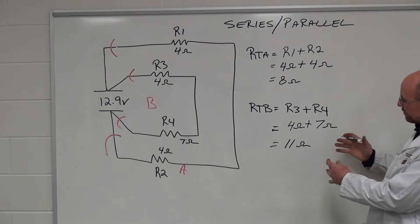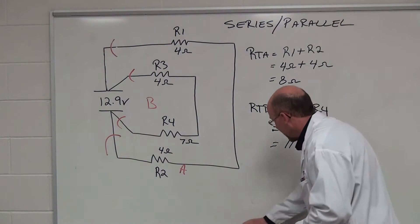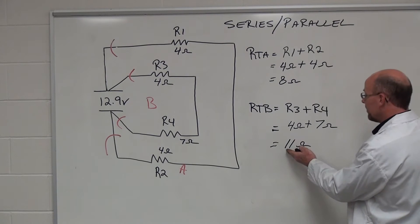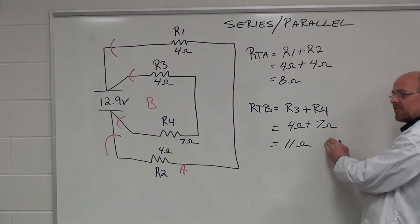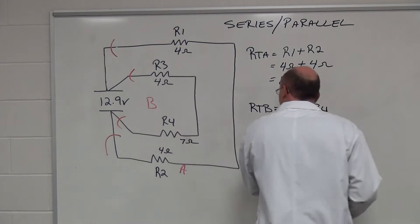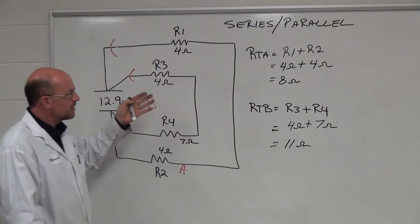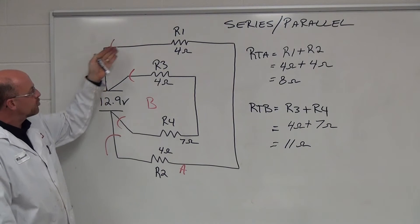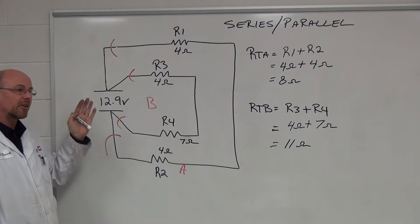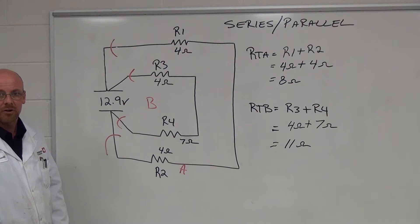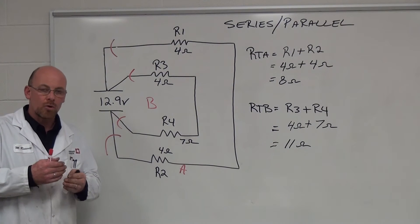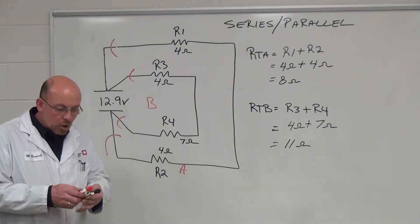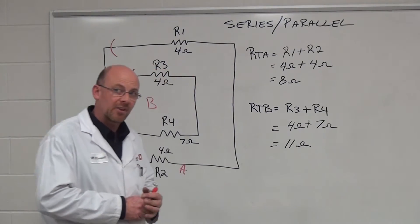Now the assumption typically would be for most technicians is because we have a series circuit here and a series circuit here that we add the two of these together. But that's not the case. What ends up happening here is that we actually have to divide them into each other because we have two separate series circuits that are wired in parallel to each other. So we have to apply product over sum or the one over formula. We're going to look at both here and see if we come up with the same values.